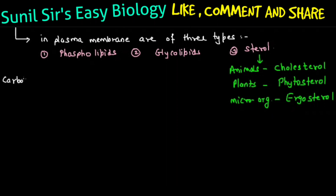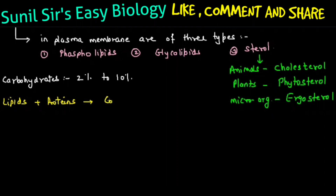2% to 10% of the plasma membrane consists of carbohydrates. Lipids and proteins are joined together, which is why we say the cell membrane is a lipoprotein kind of structure. Both the lipids and proteins are joined by covalent bonds — they are covalently bonded to each other.